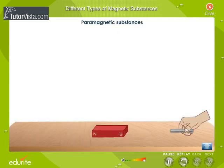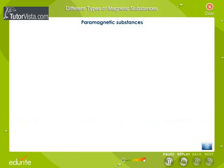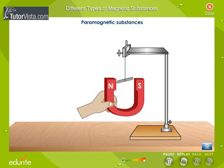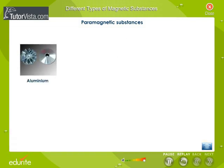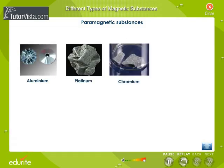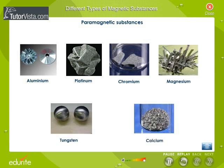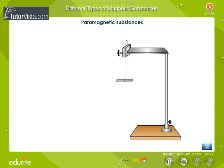Paramagnetic substances are those substances which are attracted by a strong magnetic field. Aluminium, platinum, chromium, magnesium, tungsten, and calcium are paramagnetic substances. A paramagnetic substance, when placed in a magnetic field, is feebly magnetized in the direction of the magnetizing field. Temperature has an adverse effect on a paramagnetic substance; due to rise in temperature, a paramagnetic tends to lose its magnetism.